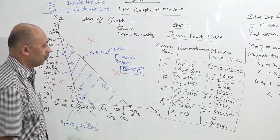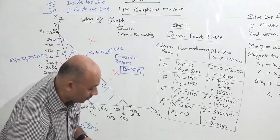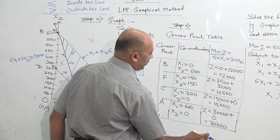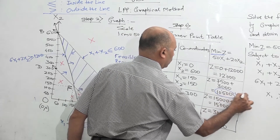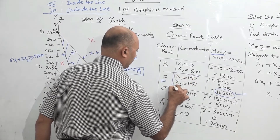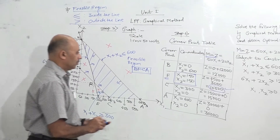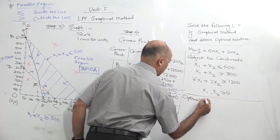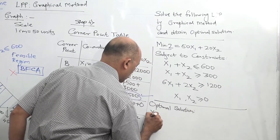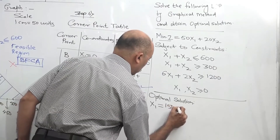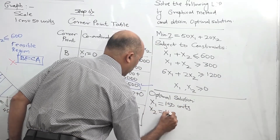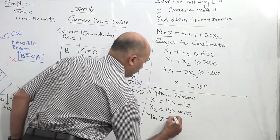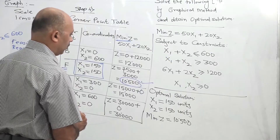The corner point table is complete. Our objective function is min Z, so we select the lowest value. The lowest value of Z is 10,500, at point F. So the optimal solution is: x1 equals 150 units, x2 equals 150 units, and the minimum value of Z is 10,500. Our final solution is complete.